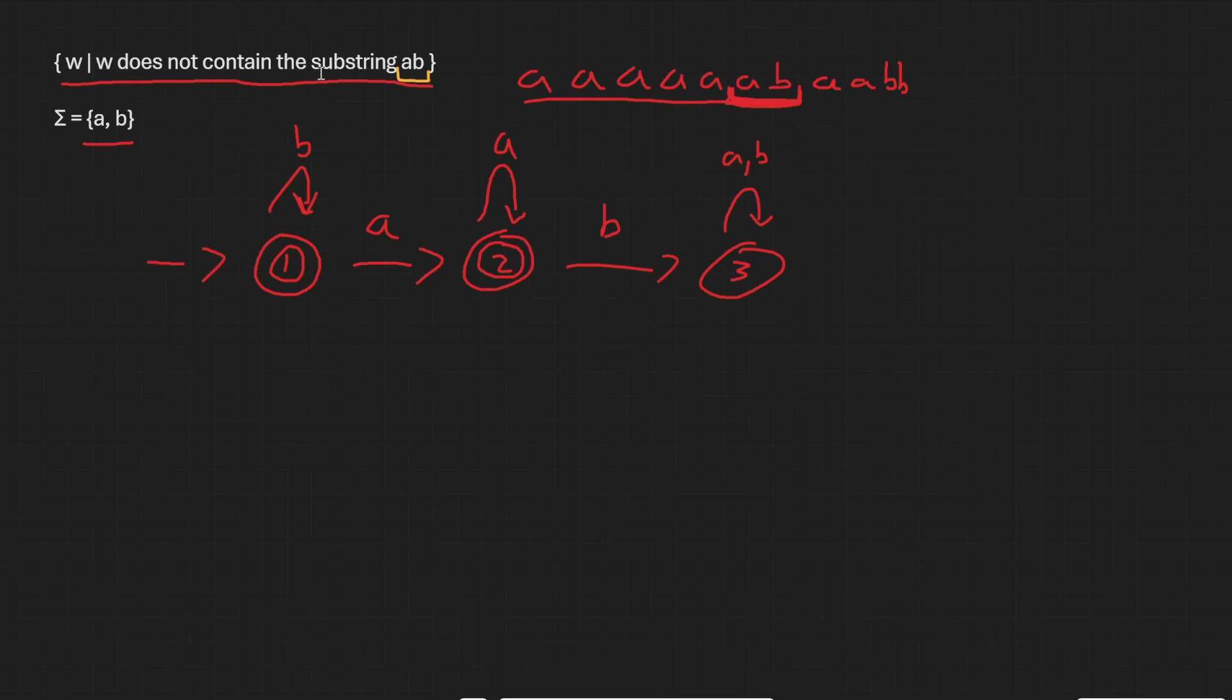If it were the other way around, if we were saying that w does contain the substring ab, then that would be a different question. And what we can do is reverse the states here. So we can make state three an accept state. Because if we're looking at w containing the substring ab, state three is the only time that we know that w contains ab. But that might be a little bit off topic. Let's put that back to how it was so that you don't get confused. But this is our entire DFA for this problem. So remember, we have our accept states here. So this is the entire problem.